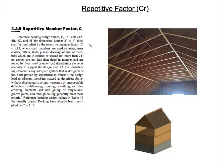Hello everyone, welcome back. For this video I'm going to be talking about the repetitive factor CR. We have here a roof system with roof rafters, collar ties, and a 3D model. The roof system consists of roof rafters, ceiling joists, and floor joists. The roof rafters are spaced at 16 inches on center. Depending on loading, some may go 12 inches on center, or as wide as 24 inches, but most structural engineers prefer 16 inches on center.